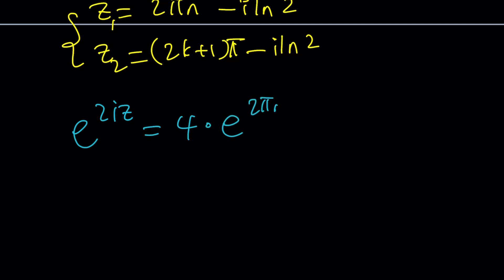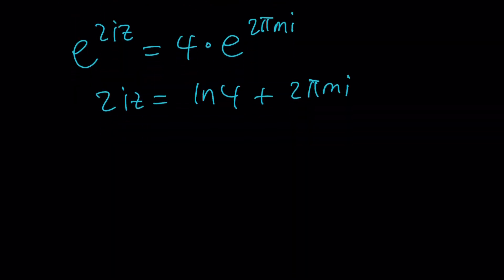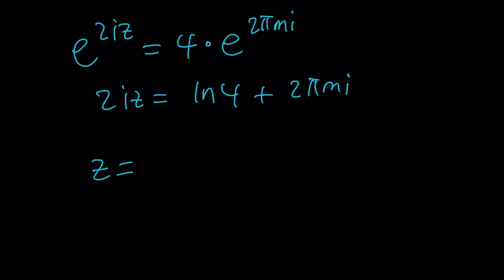I just wanted to use a different variable. By the way, k and m are all integers. And then, from here, 2iz becomes ln 4 plus 2 pi mi. And then, after doing all the work, this is what it's going to turn into. Should I just tell you what the result is?